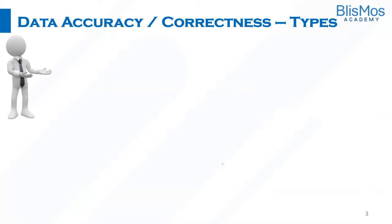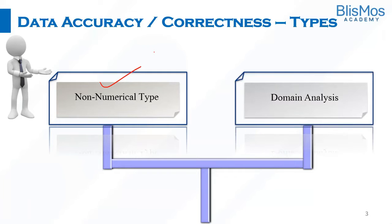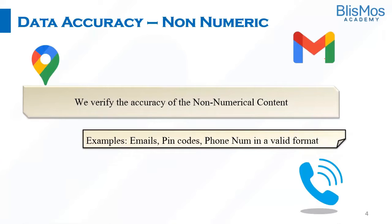We have a couple of types for data accuracy. One is data accuracy in terms of non-numerical type, and the second one is data accuracy in terms of domain. Let us look at them one by one. When we say data accuracy in terms of non-numeric, we are talking about values which cannot be averaged, added, or treated as numerical values.